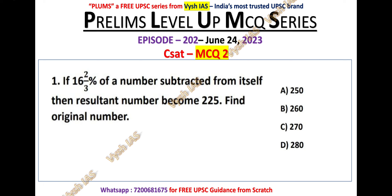Now let us solve MCQ number 2. If 16⅔ percent of a number is subtracted from itself, the resulting number becomes 225. Find the original number. If you have read the basics of the percentages chapter, you should know that 16⅔ percent is nothing but 1/6. You have to remember the basic percentage-fraction chart in order to solve questions quickly.